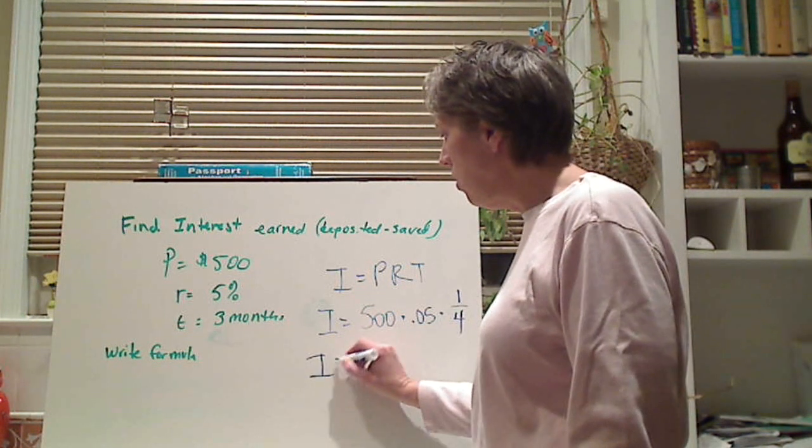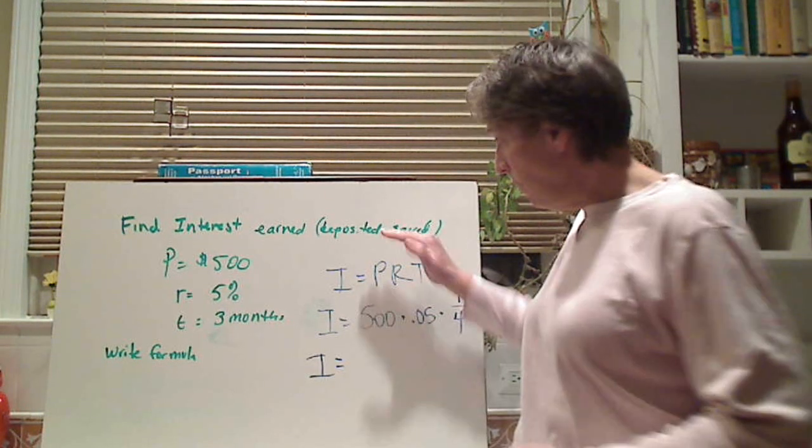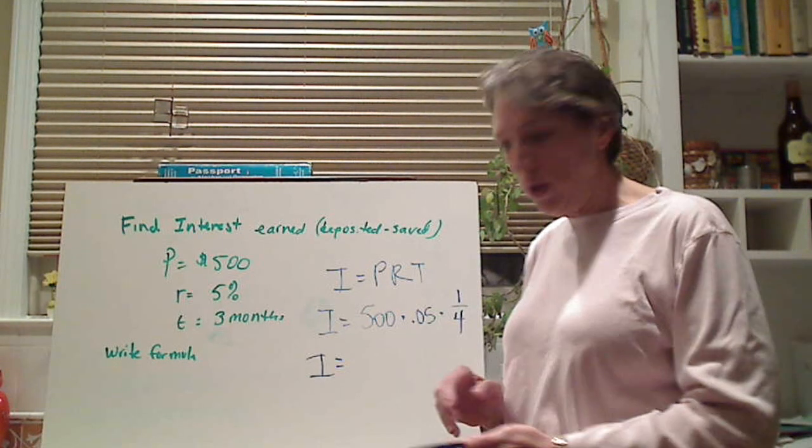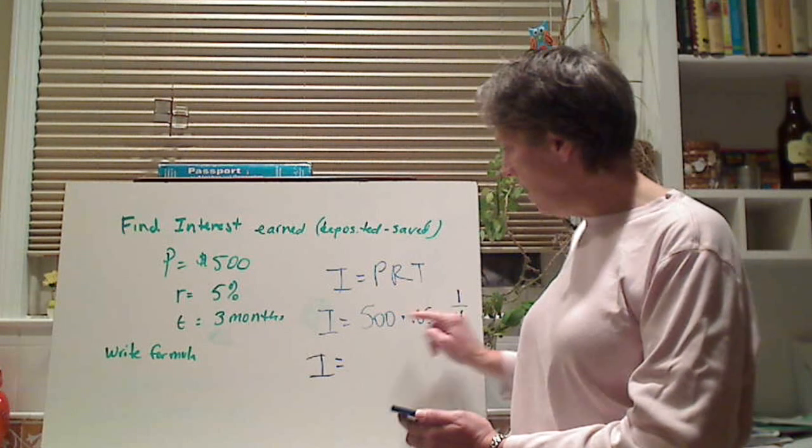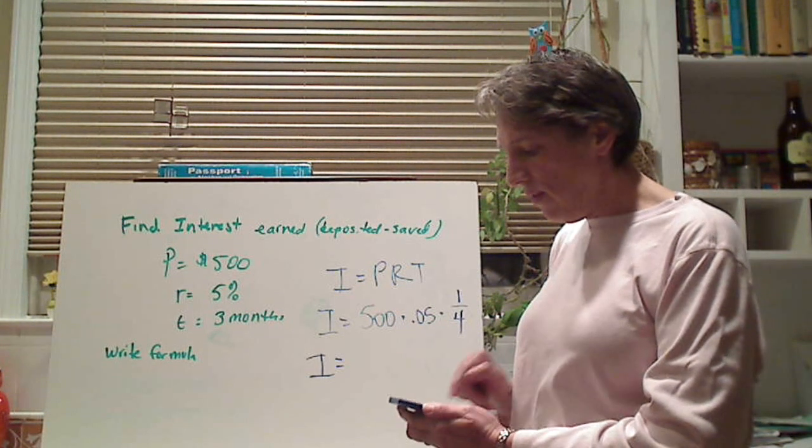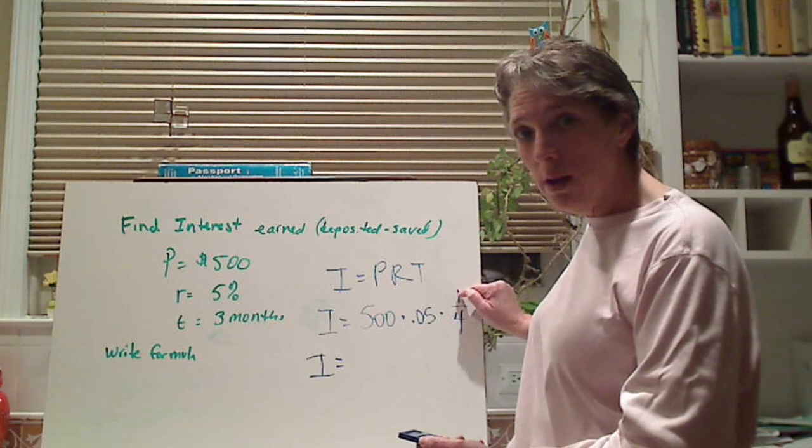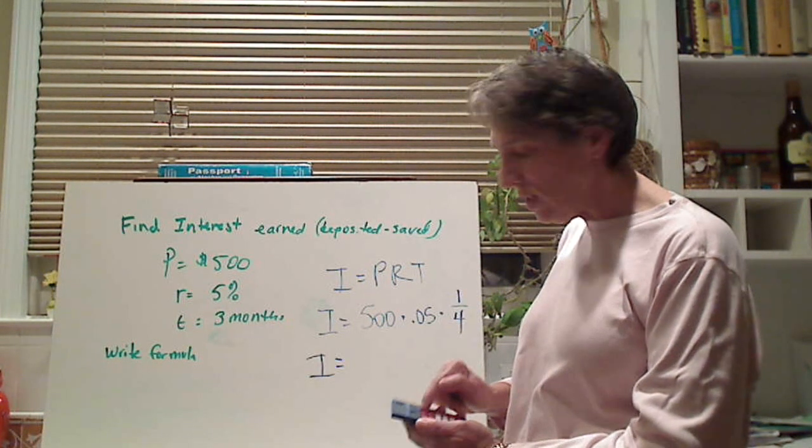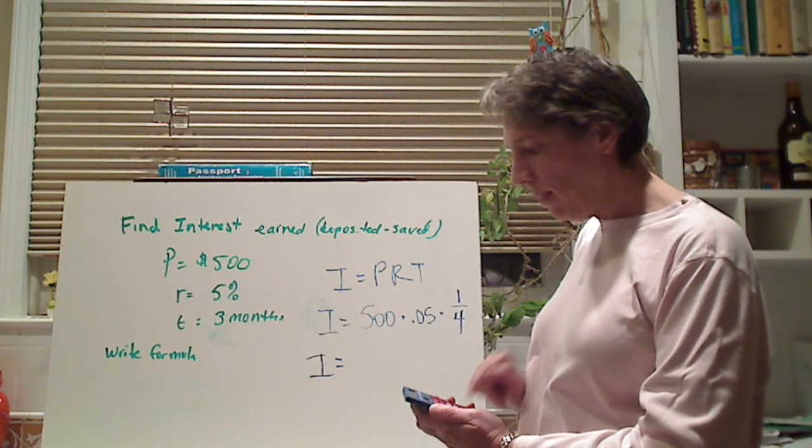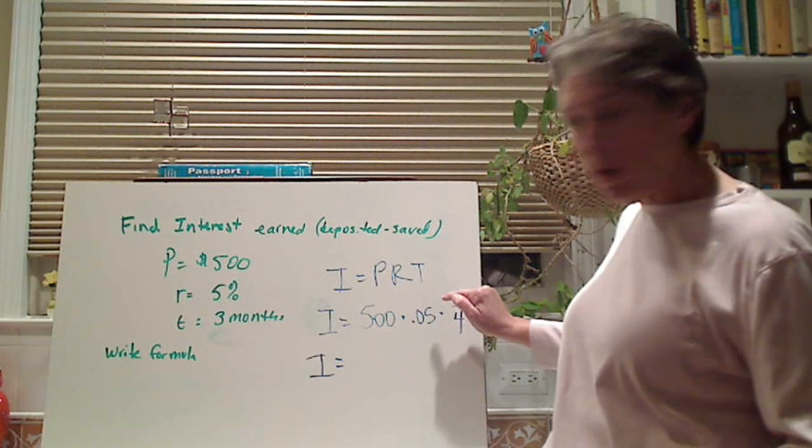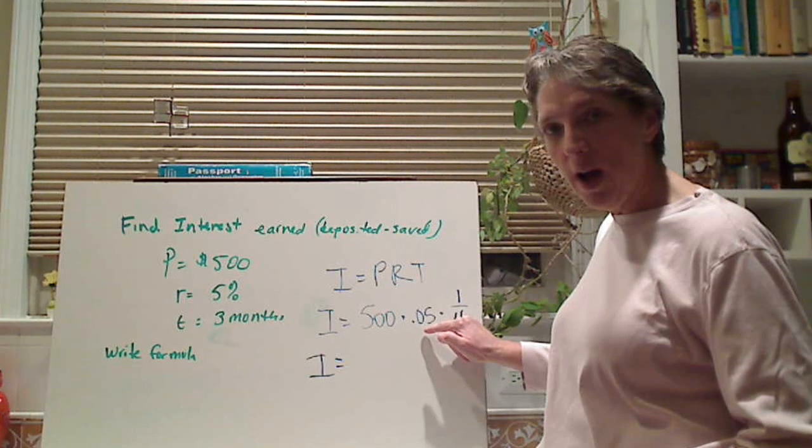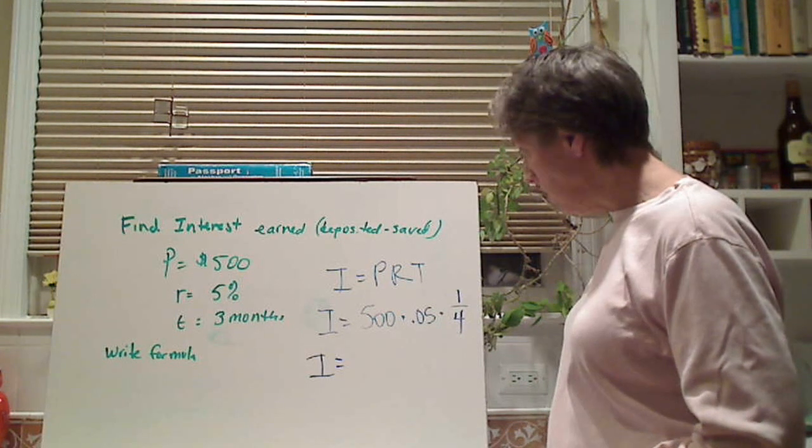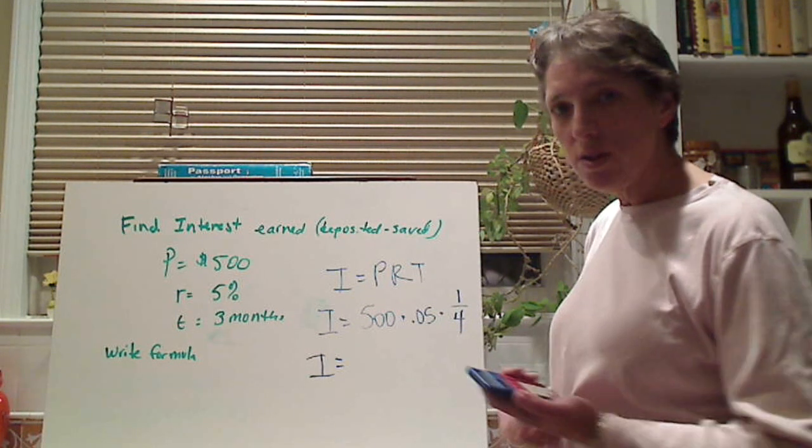Now here's the cool thing. We bring down our work. Now you get to use a calculator, but you have to show your formula. You have to show your work. And you enter it exactly how it's put. You put 500 into the calculator times 0.05 times 1. You go to the fraction. Divided by, you get the division sign, 4. Because that is a division. So you go to 500 times 0.05 times 1 divided by 4. And that's going to give you the interest, which is $6.25.